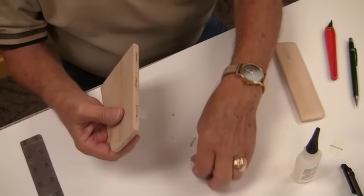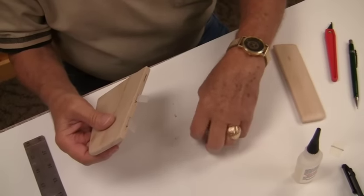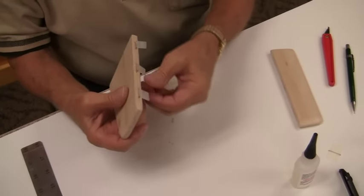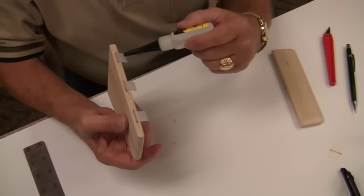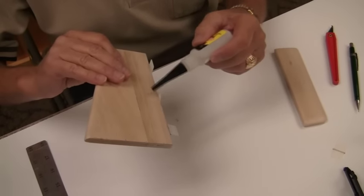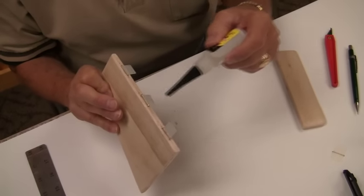And when these are done, and they're in good, and they're cured, then I would use the same method. Just put a little bit of a CA on each side, a little bit at the very end. And both of them, both sides, like that.